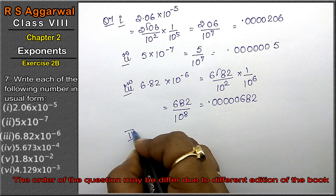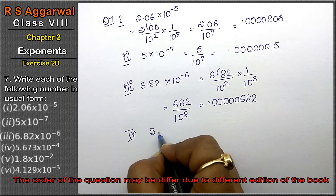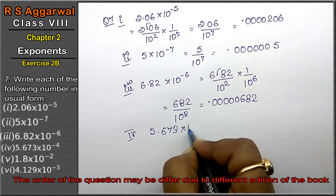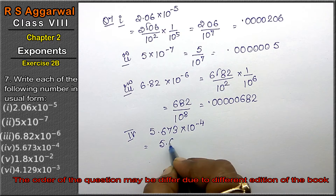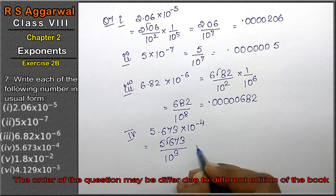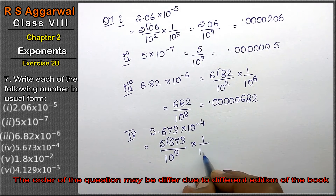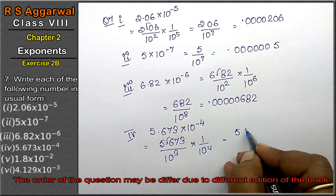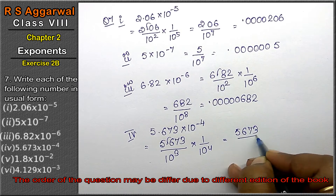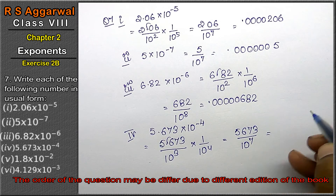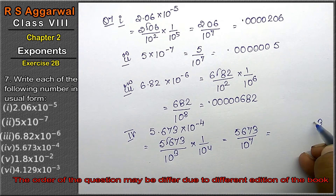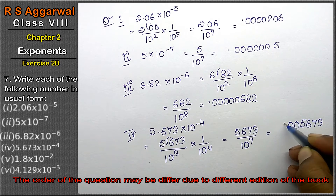Fourth part: 5.673 × 10⁻⁴. We have 5673 upon 10 to the power 7. Powers are added when multiplied. After 7 digits we place the point — 1, 2, 3, 4, 5, 6, 7 — giving us 0.0005673. That is the answer.